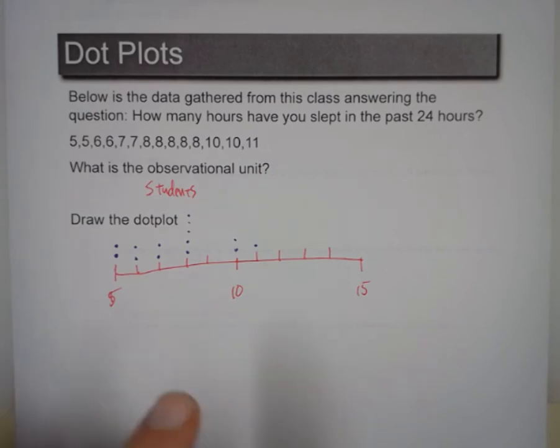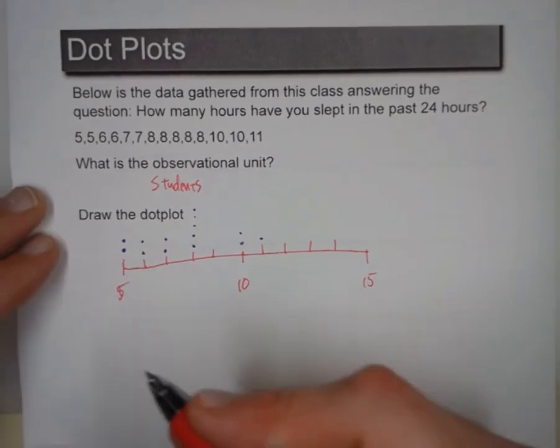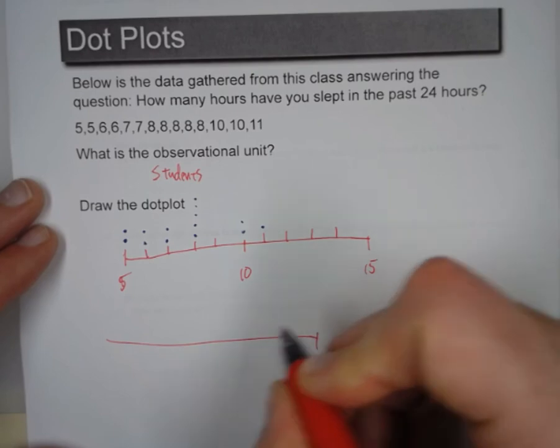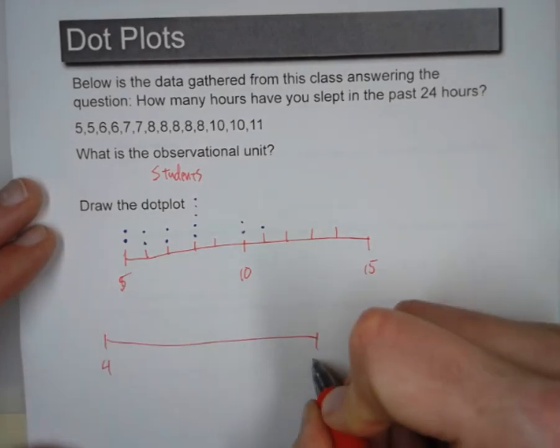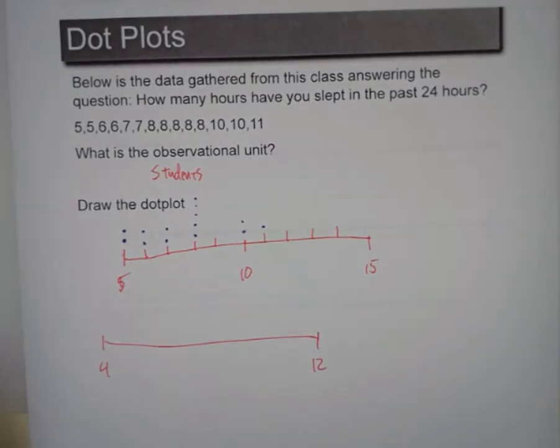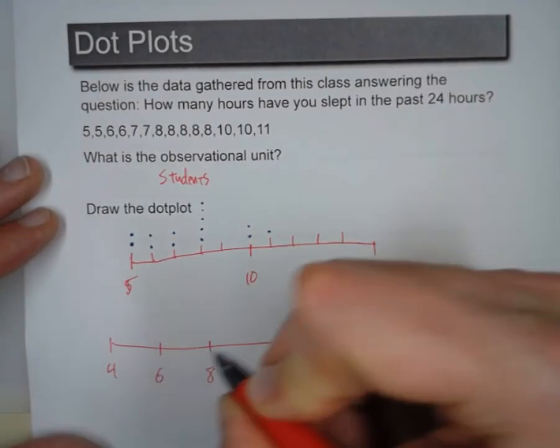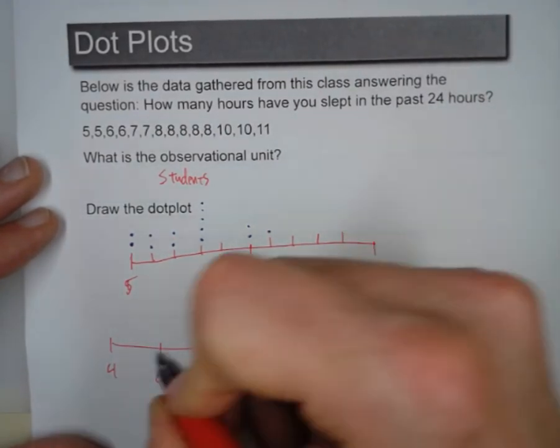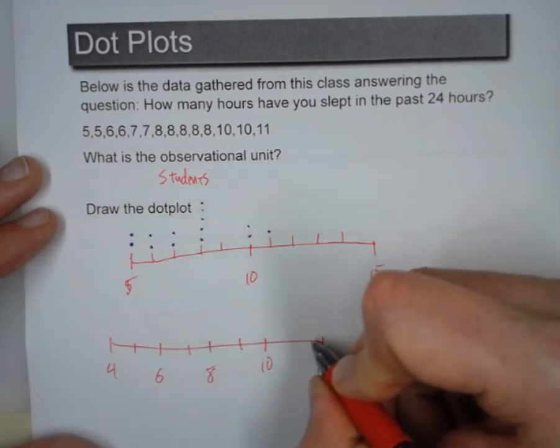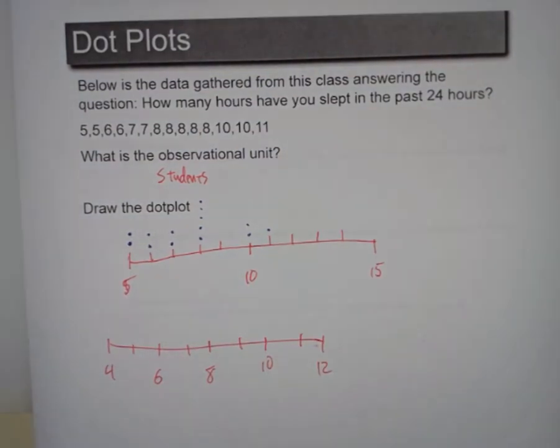Now, some people may say, well, instead of going from five to fifteen, do instead four to twelve. Yeah, that's okay. You can do that. If you cut that, that will be eight, six, ten. And then it would look like that, so you don't have as much empty space off the right-hand side. That's okay, too.